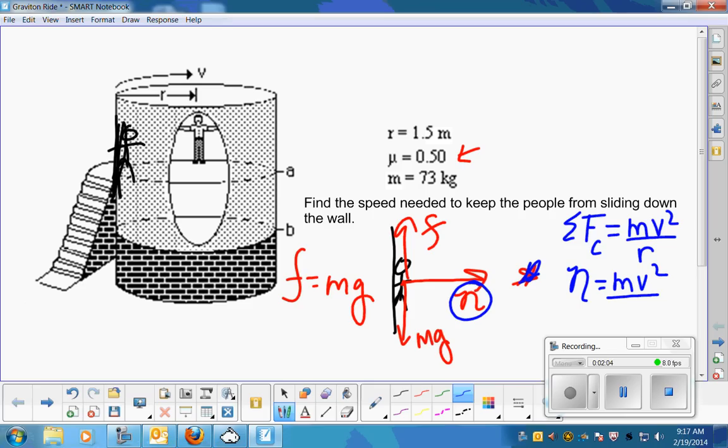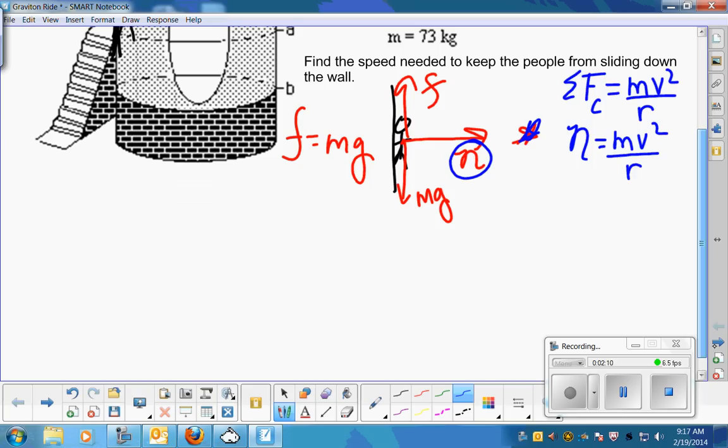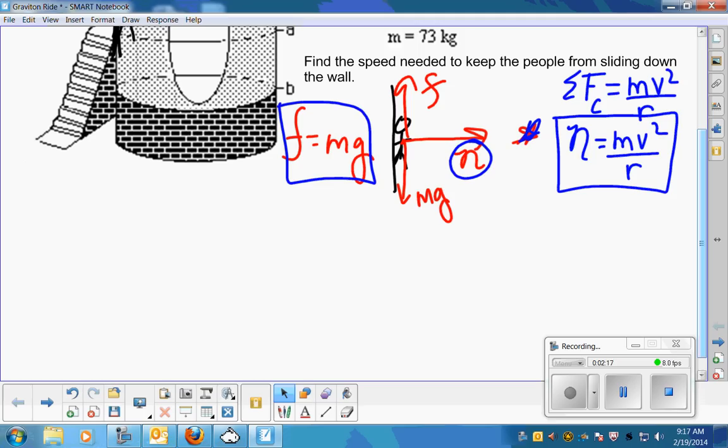So I've generated a couple of equations here. Those are going to help me solve the problem. Remember, ultimately, what we're looking for is how fast do you need to go. So I'm looking for that v right there. But right now, I don't know what the normal force is. I don't know what the friction is either. So I look at that other equation, and I'm kind of stuck, except I do know what mg is.